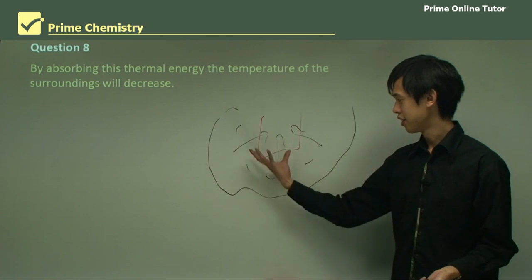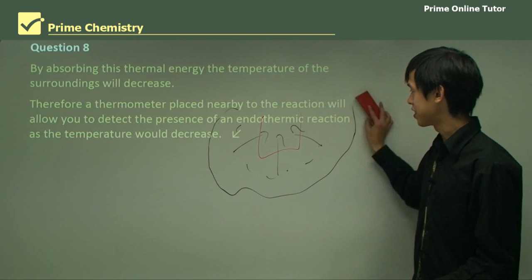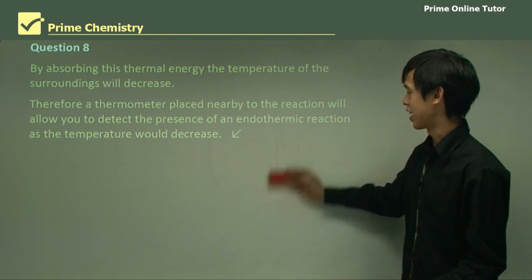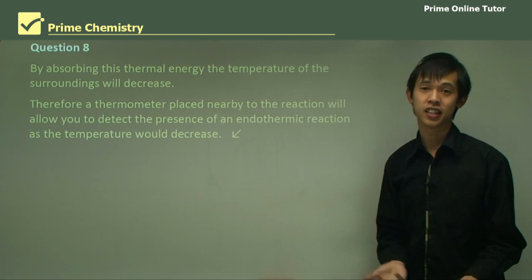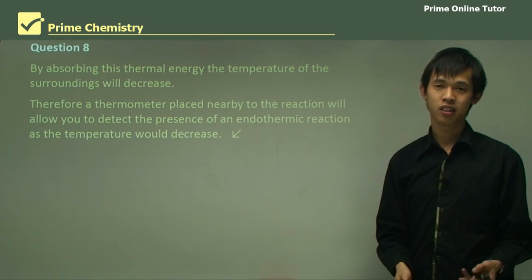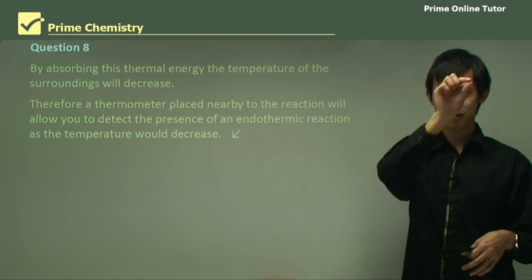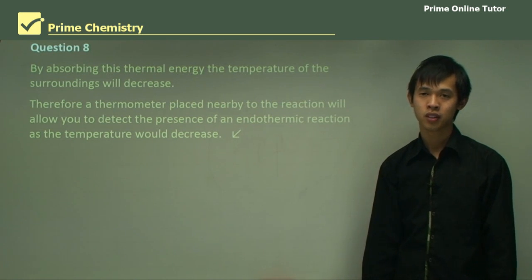So that means the temperature will go down. And so a thermometer placed nearby the reaction will allow you to detect the presence of an endothermic reaction because you could measure if the temperature is actually decreasing in that area, right? Because it's endothermic, it's absorbing the energy, the temperature's going down. So you measure the temperature going down and you know that there's an endothermic reaction going on.